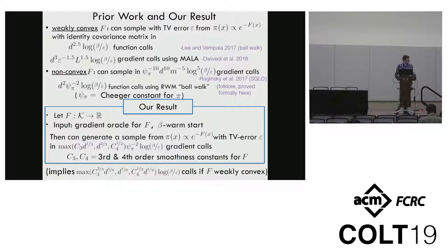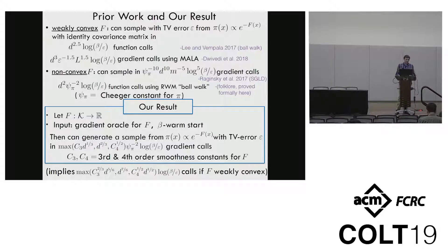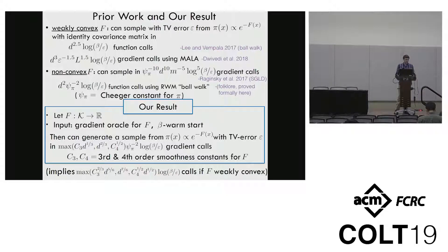In the setting where f is non-convex, one can also bound the number of gradient evaluations needed to sample from the Gibbs distribution. You can bound this number of gradient evaluations as a function of a quantity called the Cheeger constant of the target distribution. Currently, the best bound in this non-convex setting in terms of the Cheeger constant grows like the dimension squared times 1 over the square root of the Cheeger constant.